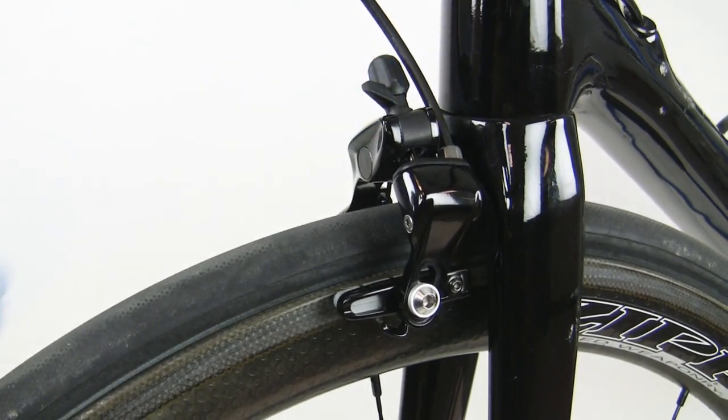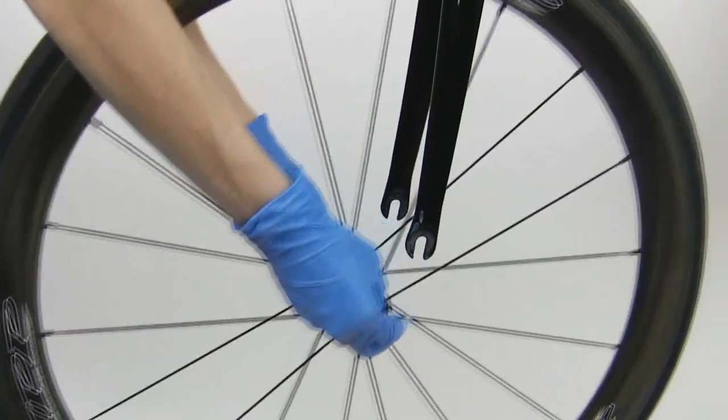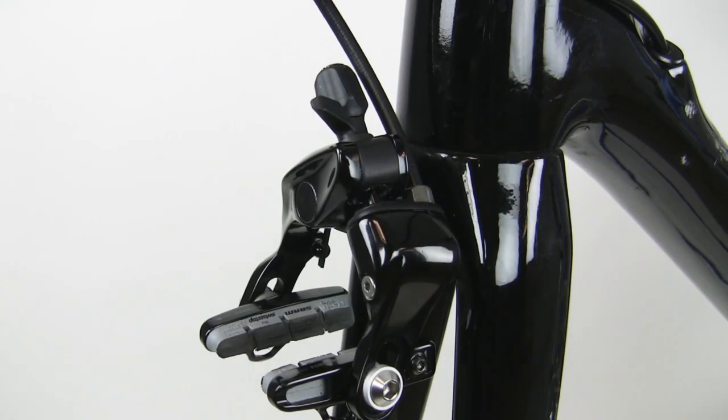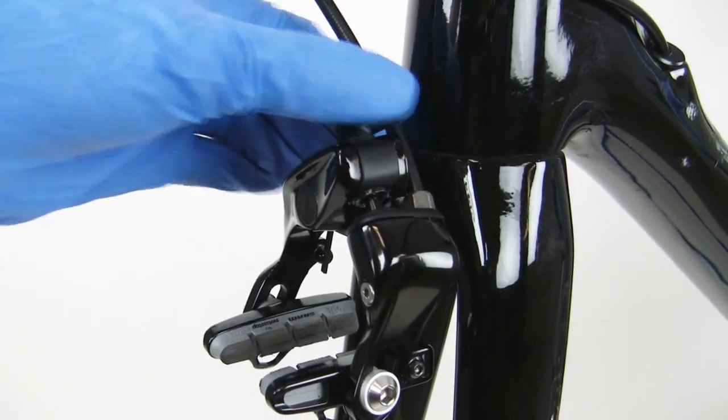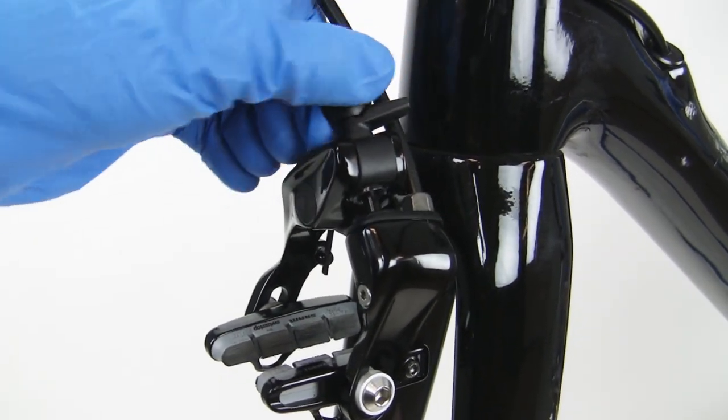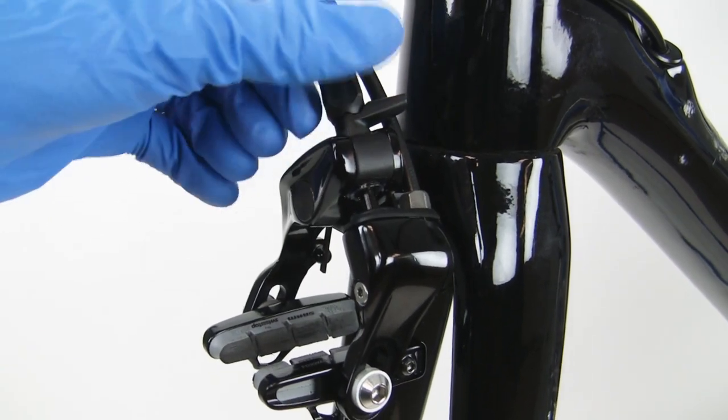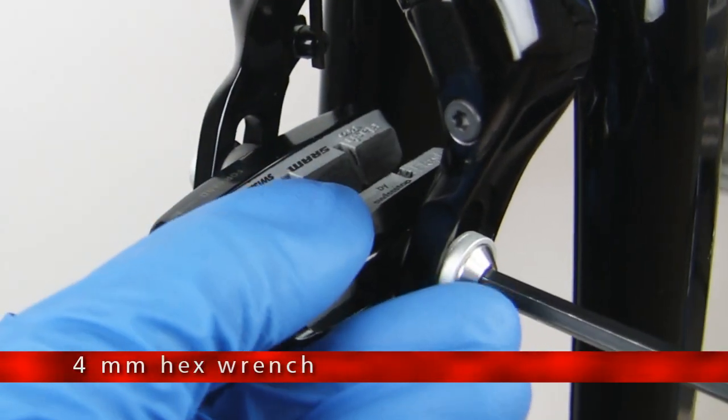Rotate the quick release lever to the open position. Remove the wheel from the bike. Rotate the quick release lever to the closed position. Turn the barrel adjuster clockwise until it stops. Remove the brake pads from the caliper.